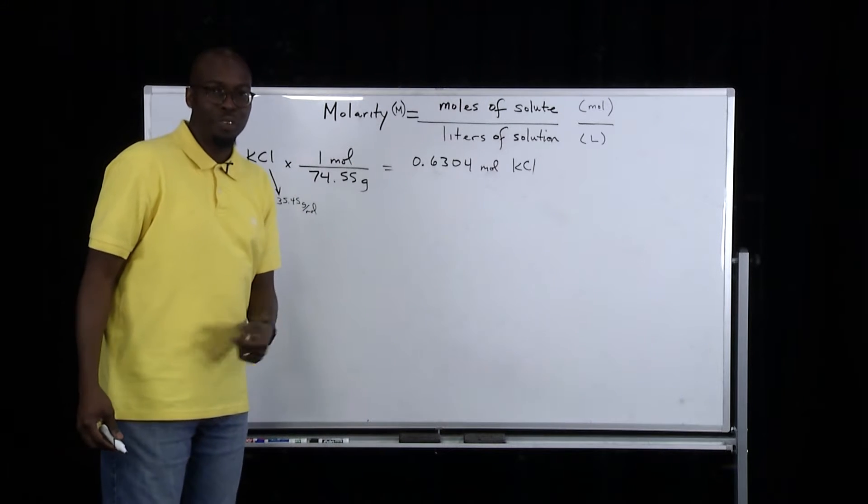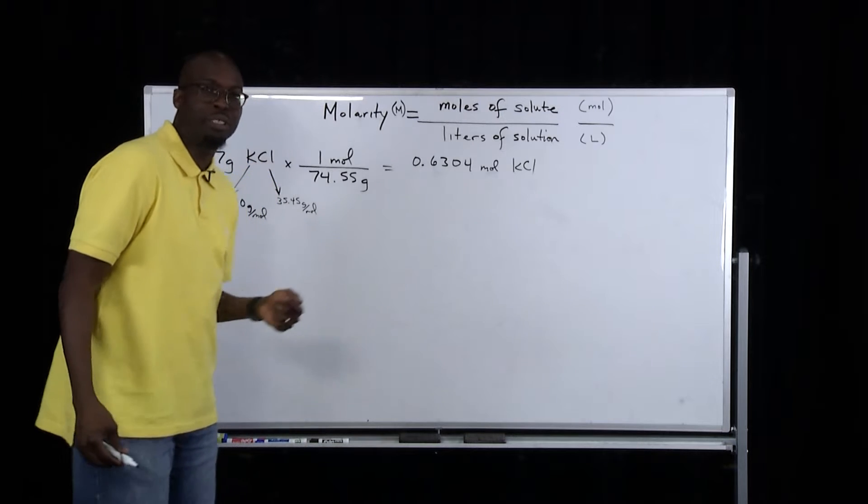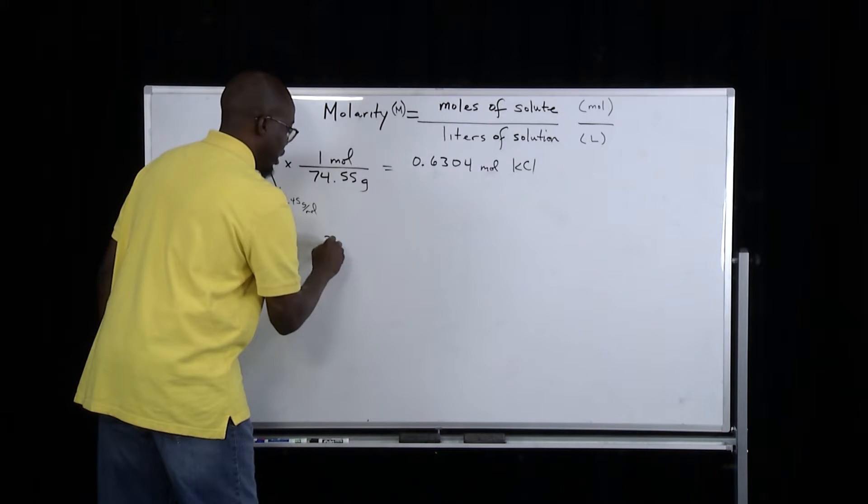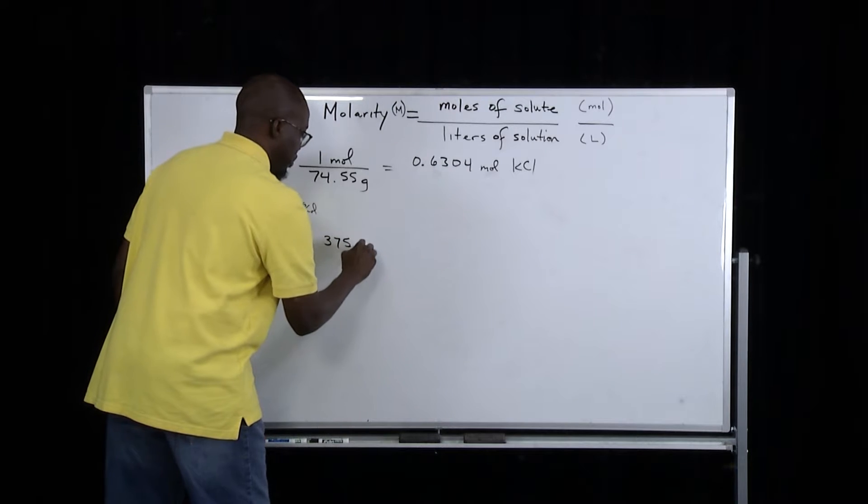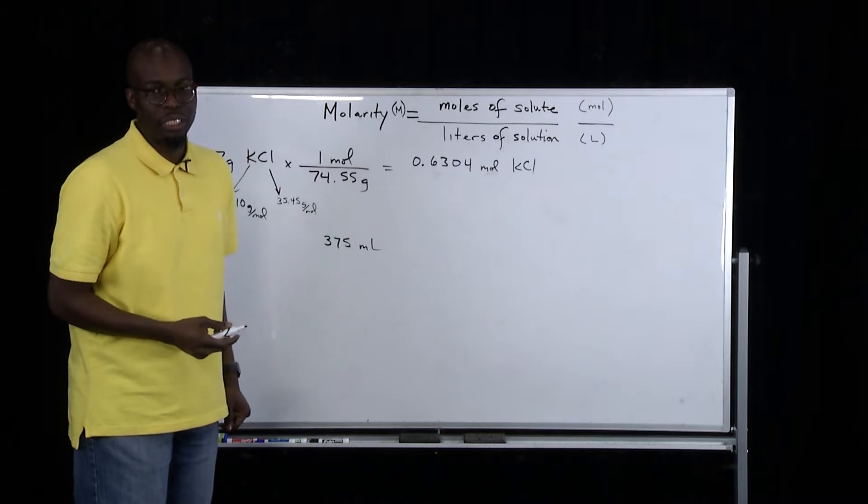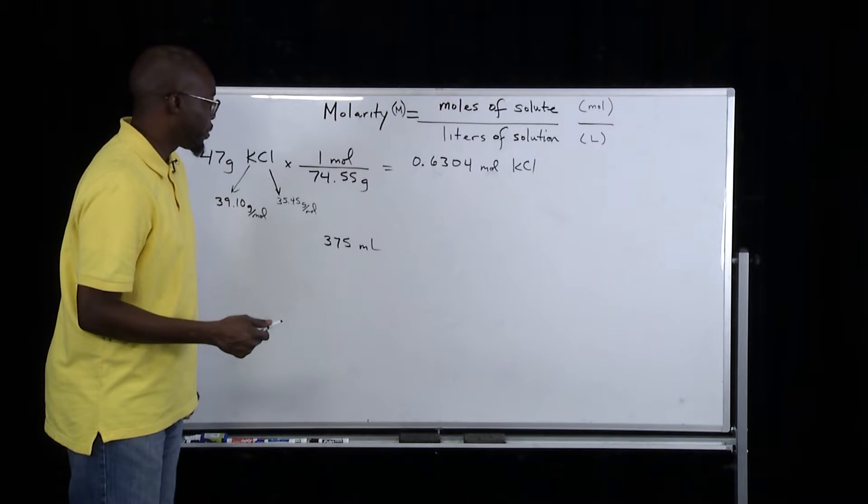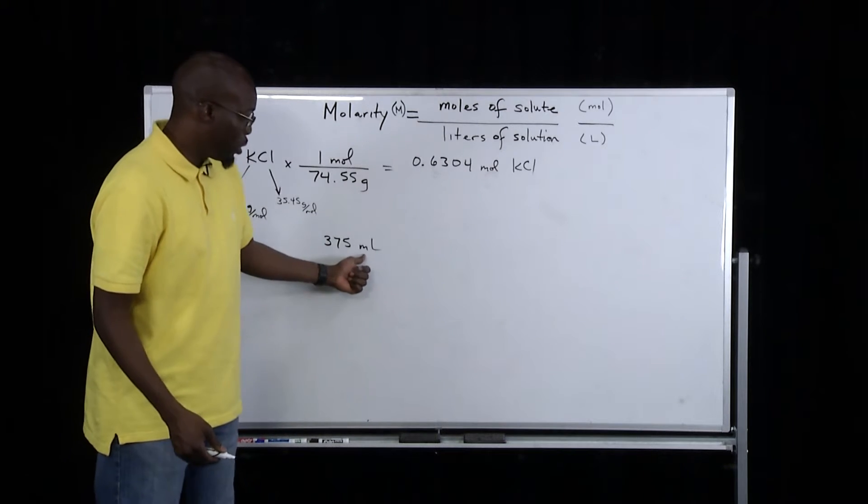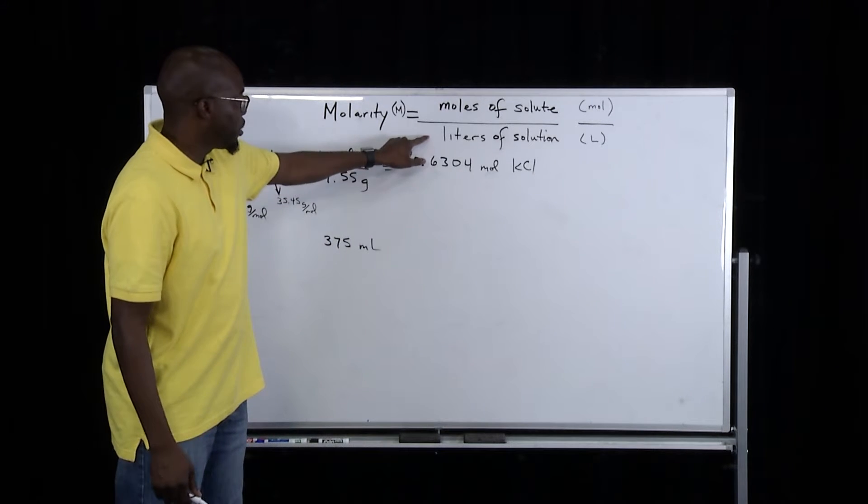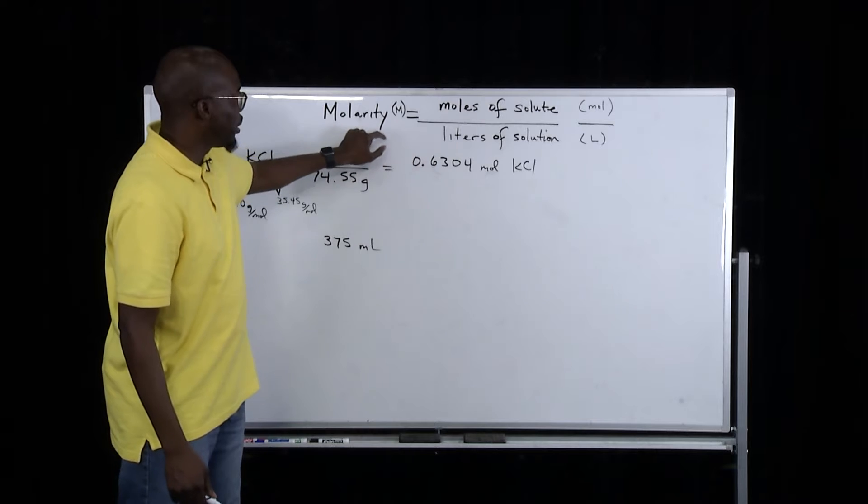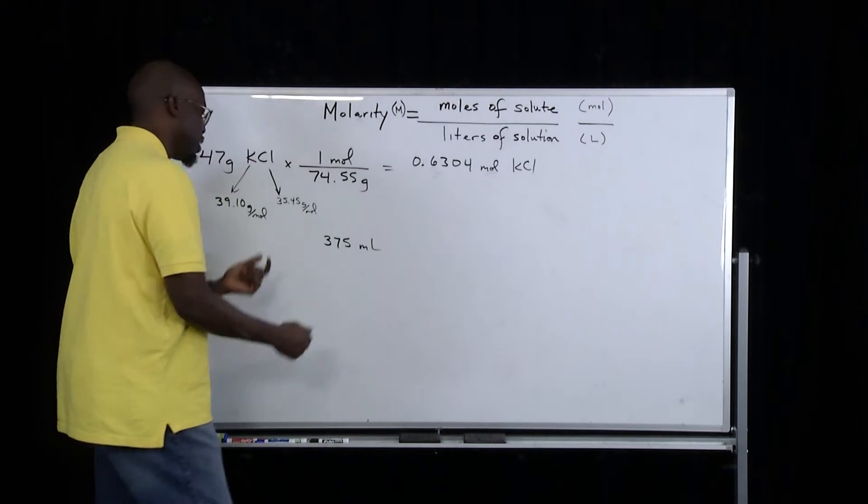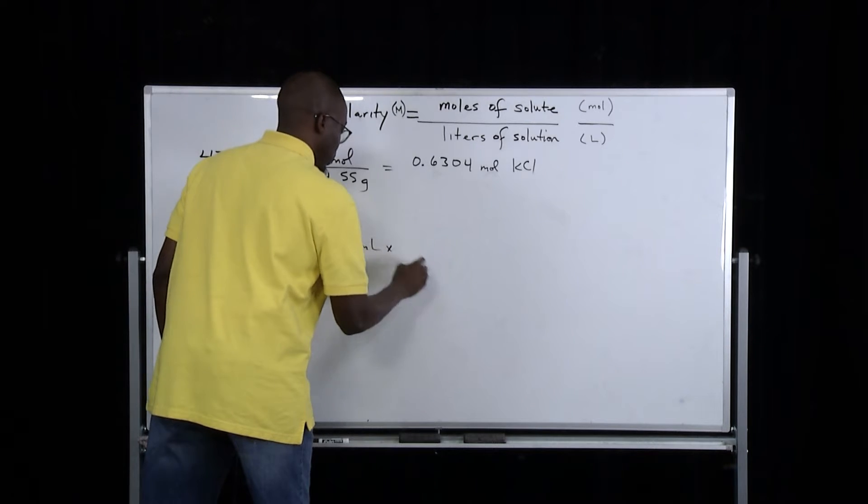In order to solve for the liters of the solution, we take the 375 milliliters. That's the second piece of information that was given in the problem. Now, we must keep in mind that the unit is given in milliliters, yet the unit in the molarity equation is in liters. So we must simply convert from milliliters to liters.